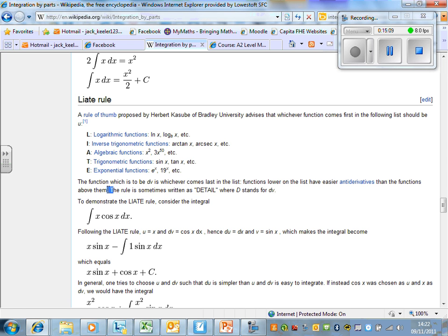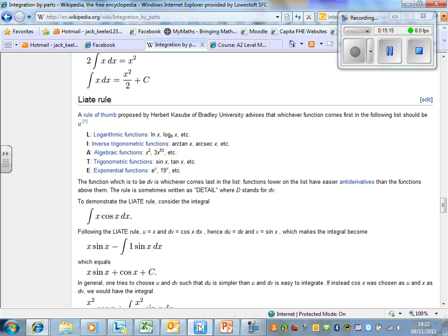Yeah, so the rule is sometimes written as DETAIL, where D stands for DV. Whatever. LIATE rule, something you might want to have a look at. So that concludes the video. See you next week, for the next installment of Keyless Core 3.